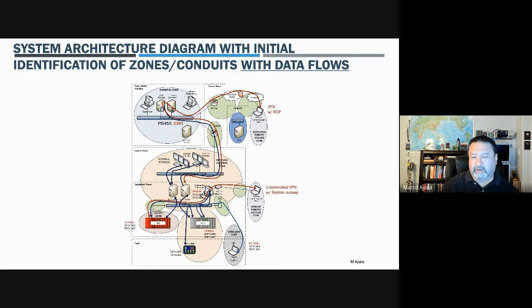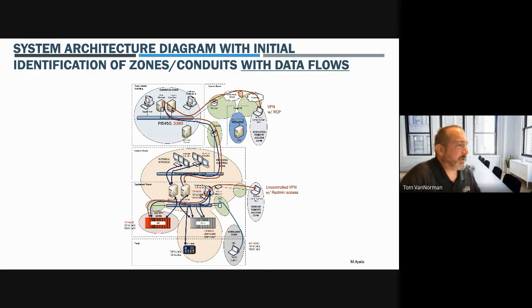When we talk about placement of sensors and placement to look at the data, a lot of people were just looking at north-south traffic. Things going from your control room zone down to your equipment room zone, for example, or control room up to your enterprise. That's what we call north and south. East and west is everything within that zone, or within that one control room, for example.